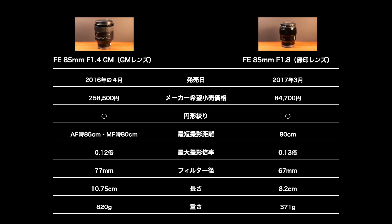長さは8.2cm、重さは371gで、GMレンズの方が2.5cm長く、449g重いです。